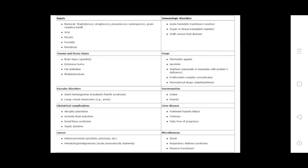Cancer: adenocarcinoma of prostate and pancreas. Hematologic malignancy, acute promyelocytic leukemia. Other causes include shock, respiratory distress, and massive transfusion. Now the pathophysiology.